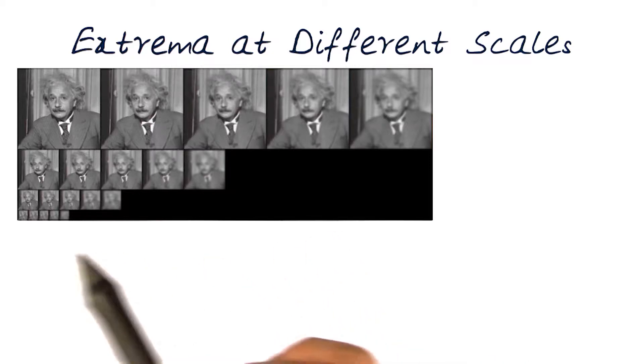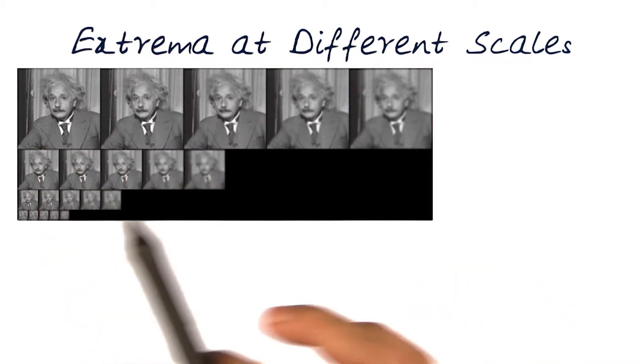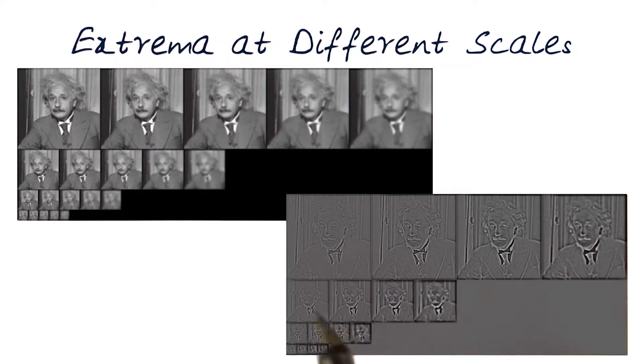You can see that we can now do the pyramids and start looking at information at different scales. This shows us how we can do the difference of Gaussians between different scales.